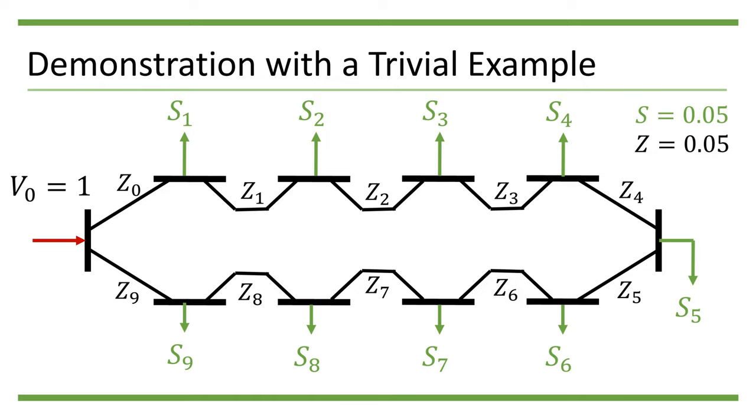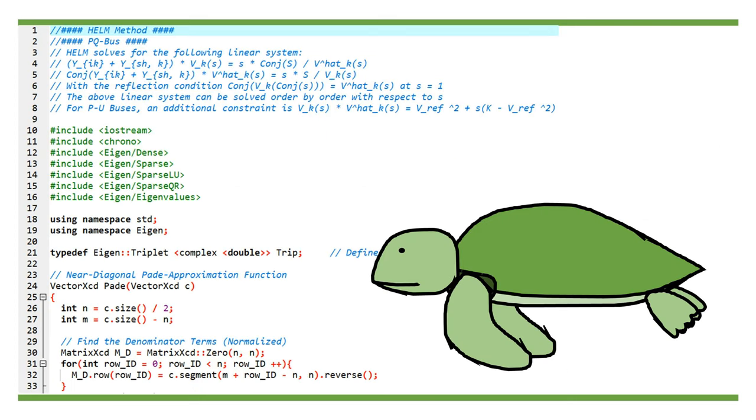We run the HELM with 20 terms of the power series. If we run the C++ code I provided in the link given in the description or in the comment using the same parameters, you will get these results.